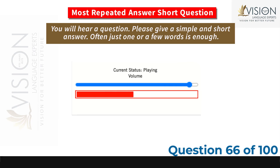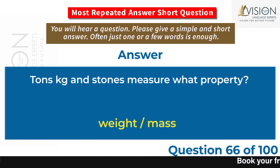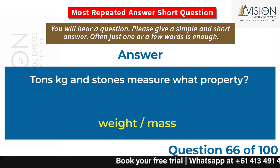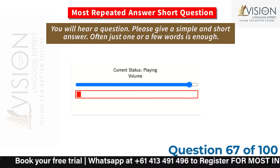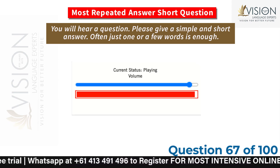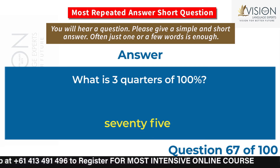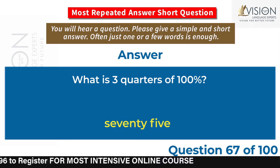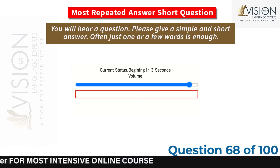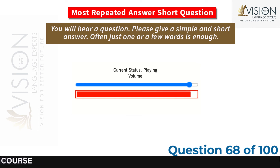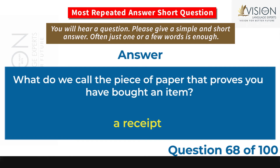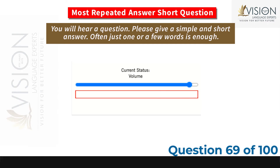Tons, kg and stones measure what property? Weight, mass. What is three-quarters of 100%? 75. What do we call the piece of paper that proves you have bought an item? A receipt.